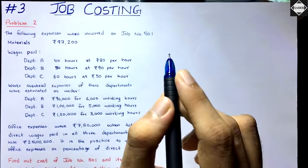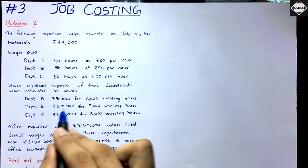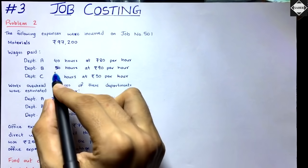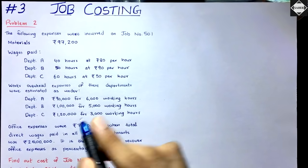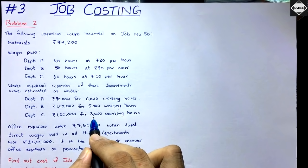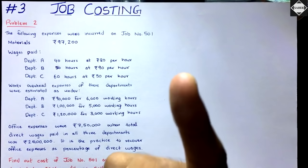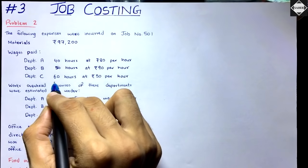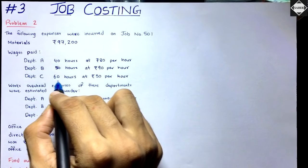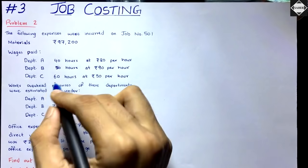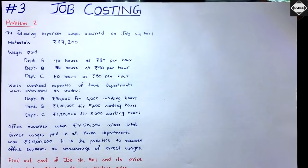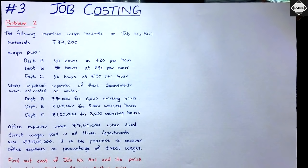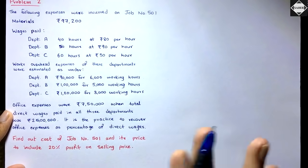For department B: ₹1,00,000 divided by 5,000 working hours gives the rate, multiplied by 50 actual hours. For department C: ₹1,20,000 divided by 3,000 working hours gives the rate, multiplied by 60 actual hours. That's how you calculate works overhead for each department. Then we have the most important part of this problem — office expenses.